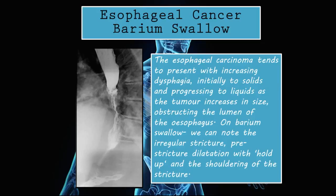Usually when we have a malignancy, the tumor tends to invade its surroundings. As you can see here, it's not a very thin straight line — it's a very rigid, rough line, and that is a sign of carcinoma. The difference between a cancer stricture and a normal stricture is that in a cancer stricture we have irregular borders. Above the stricture you can see dilation because food is trying to push through but it's becoming increasingly difficult — this is a sign of esophageal cancer on barium swallow.